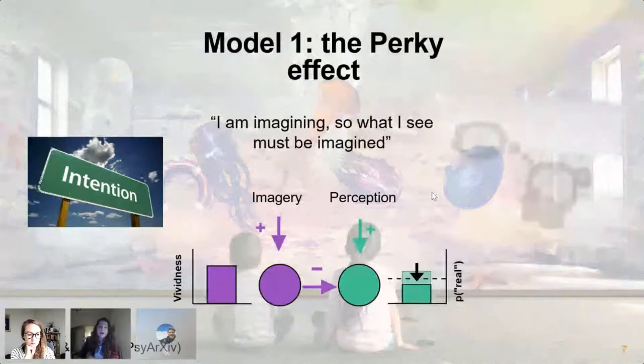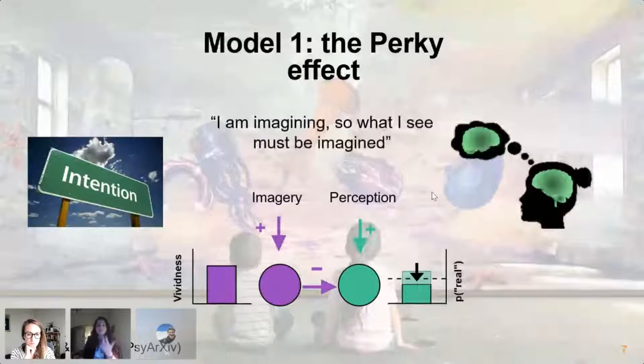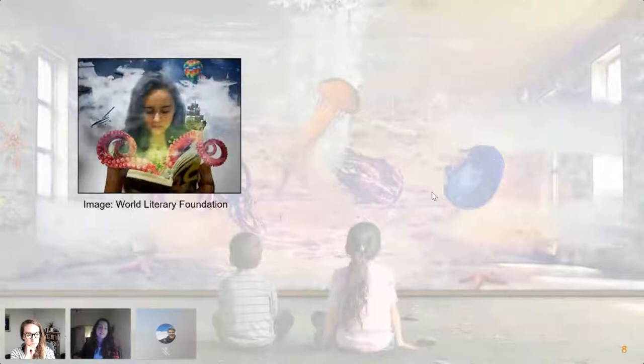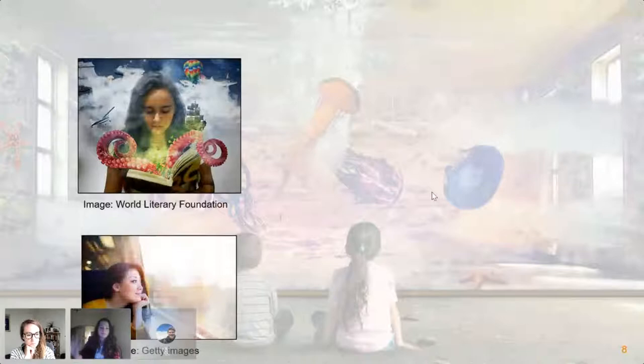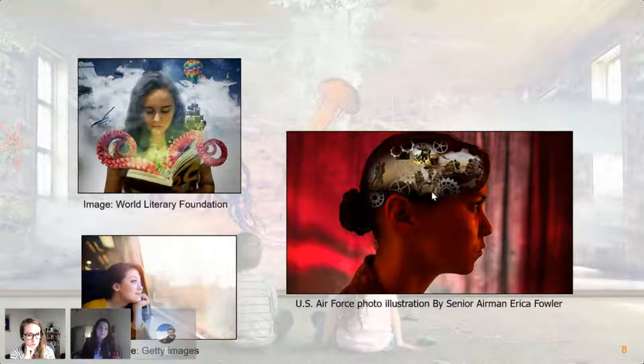This kind of assumes that we have awareness of our intentions — that we know we're imagining, and this knowledge is used to explain away sensory signals. But there are very many instances of imagery where we're not consciously generating these signals. For example, when we're reading, images pop up in our mind outside of our control. Or when we're daydreaming, a rapid stream of mental images flows by. Or in very negative cases, relivings of traumatic events also happen involuntarily. So even though there's no clear intention in these cases, people are generally still able to say that imagery does not reflect reality.